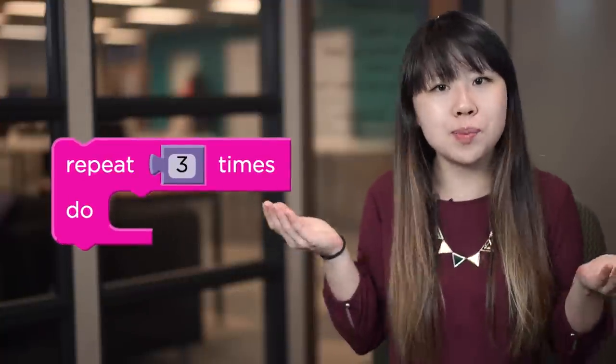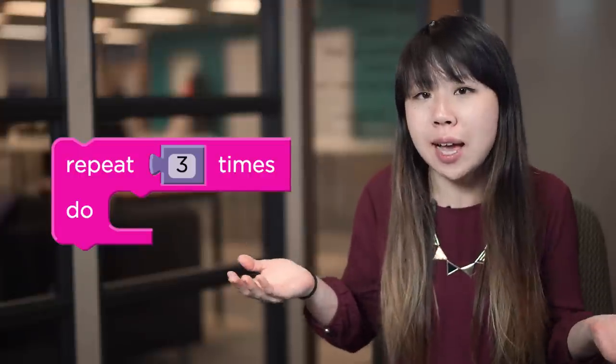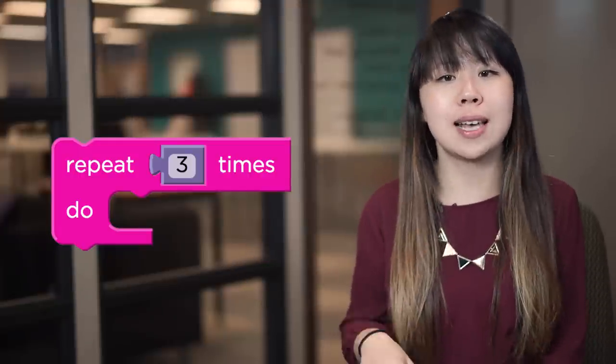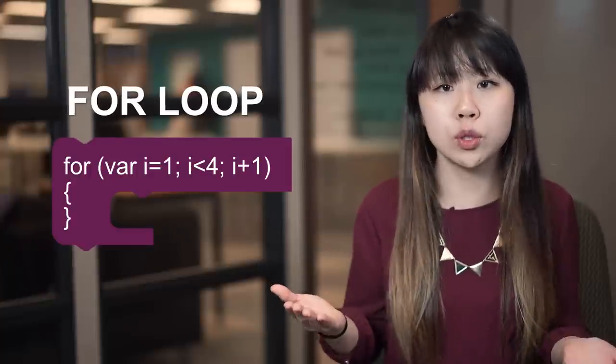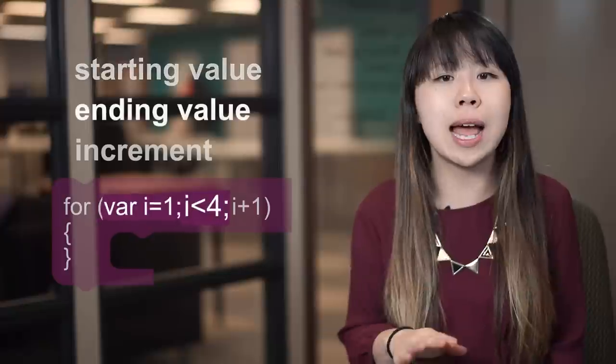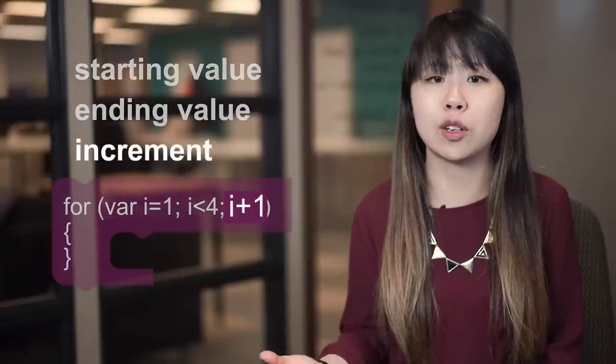So when you use a repeat block to loop your code, how does the computer know when it's repeated enough times? The repeat block is actually hiding a more sophisticated piece of code called a for loop, which counts from a starting value up to an ending value by a specific increment.